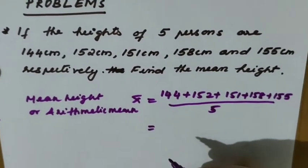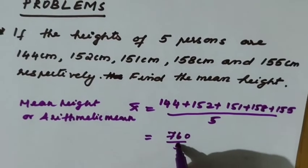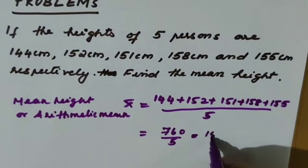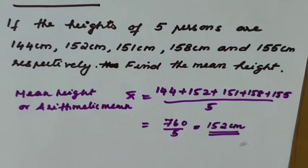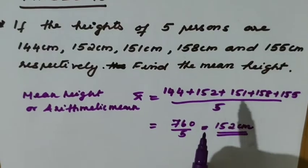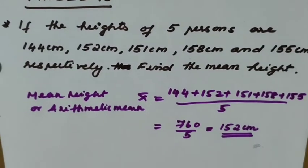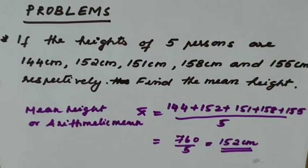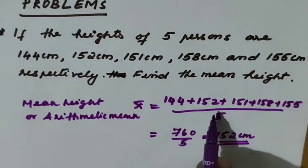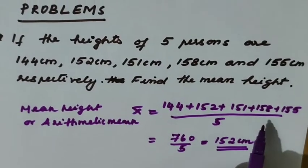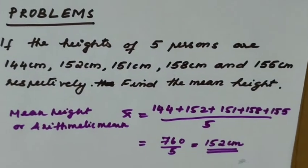Adding everything, the sum is 760, divided by 5, which equals 152 cm. That is the mean height. The formula is x-bar equals sum of all observations divided by number of observations. So the arithmetic mean of 144, 152, 151, 158, and 155 divided by 5 equals 152 cm.